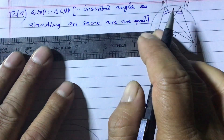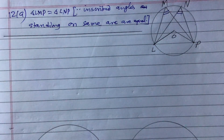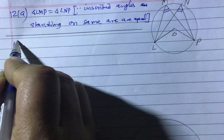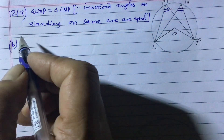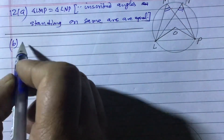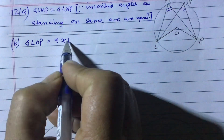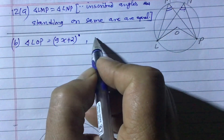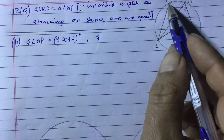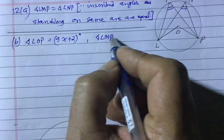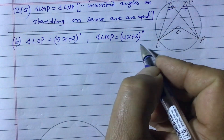Now we move to question number 12B. In part B, we need to find the value of x. It is given that central angle LOP equals 9x plus 2 degrees, and inscribed angle LMP equals 4x plus 5 degrees.